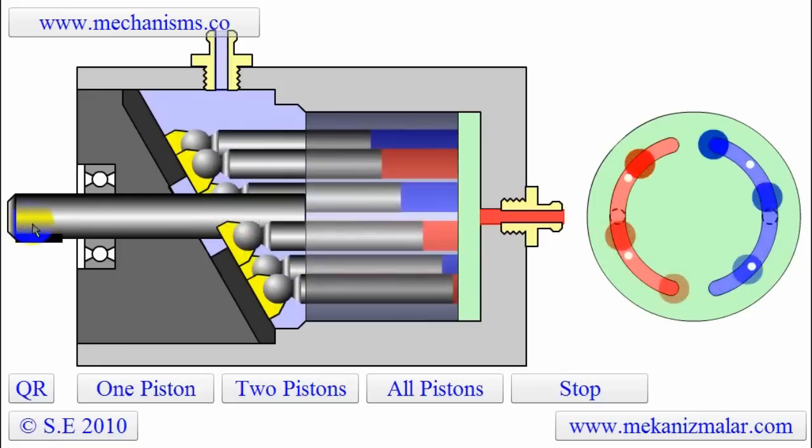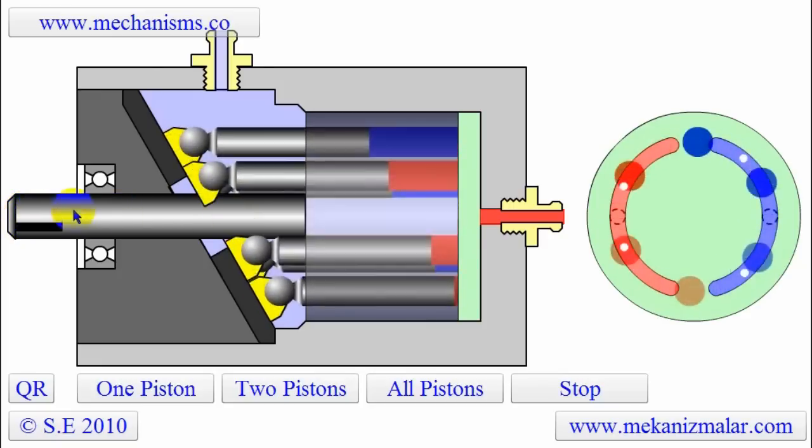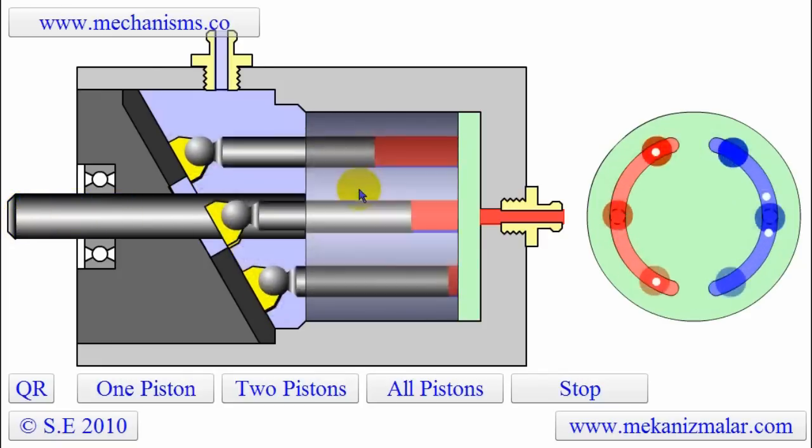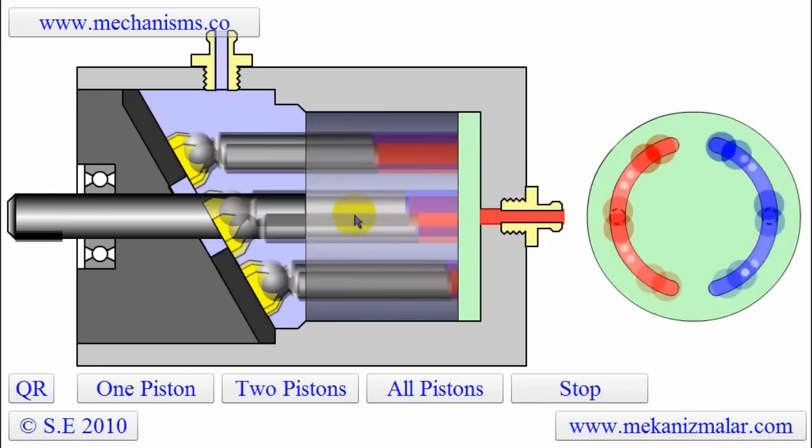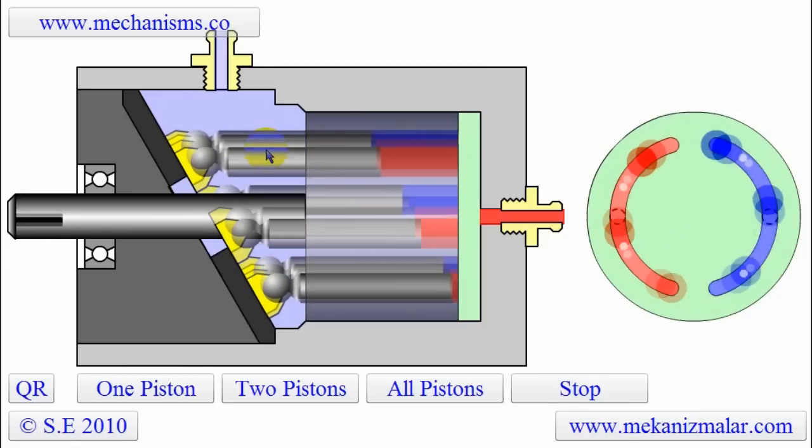A main shaft connected to a gasoline engine or an electric motor rotates a cylinder barrel. The cylinder barrel looks like a revolver's barrel and the pistons are located inside this barrel just like bullets.